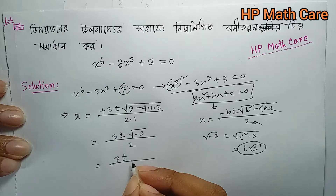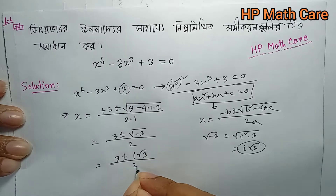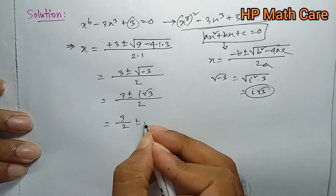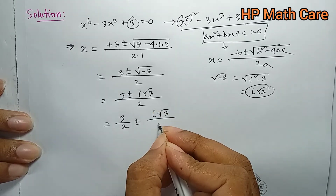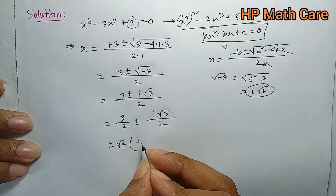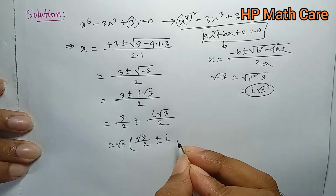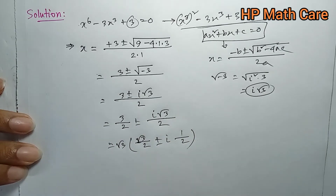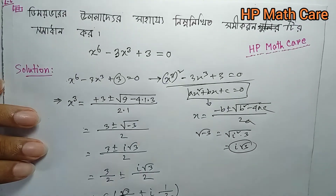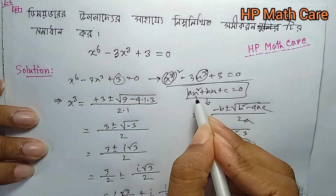So the result is 3 plus minus i root 3 by 2. Now let's write that as 3 by 2 plus minus i root 3 by 2. Let's write root 3 common. Now let's write root 3 by 2 plus minus i into 1 by 2.